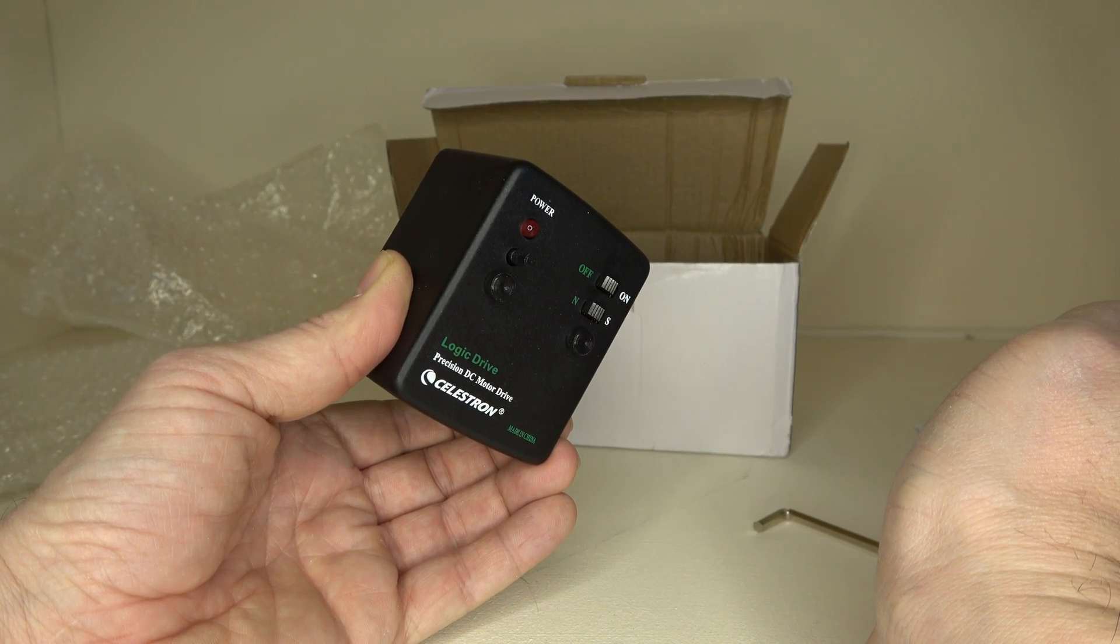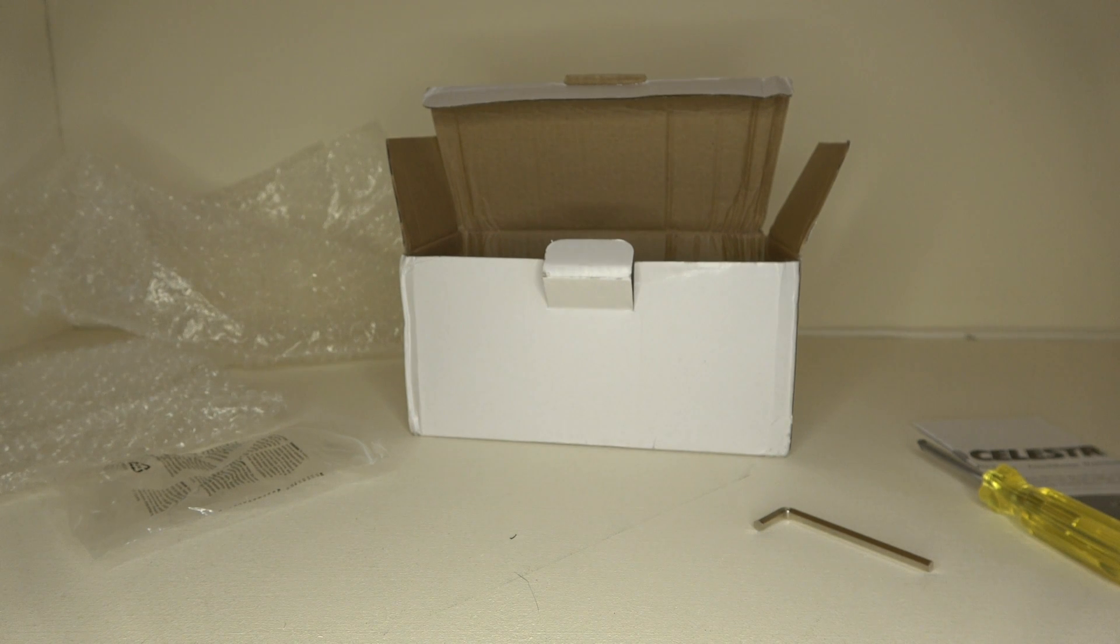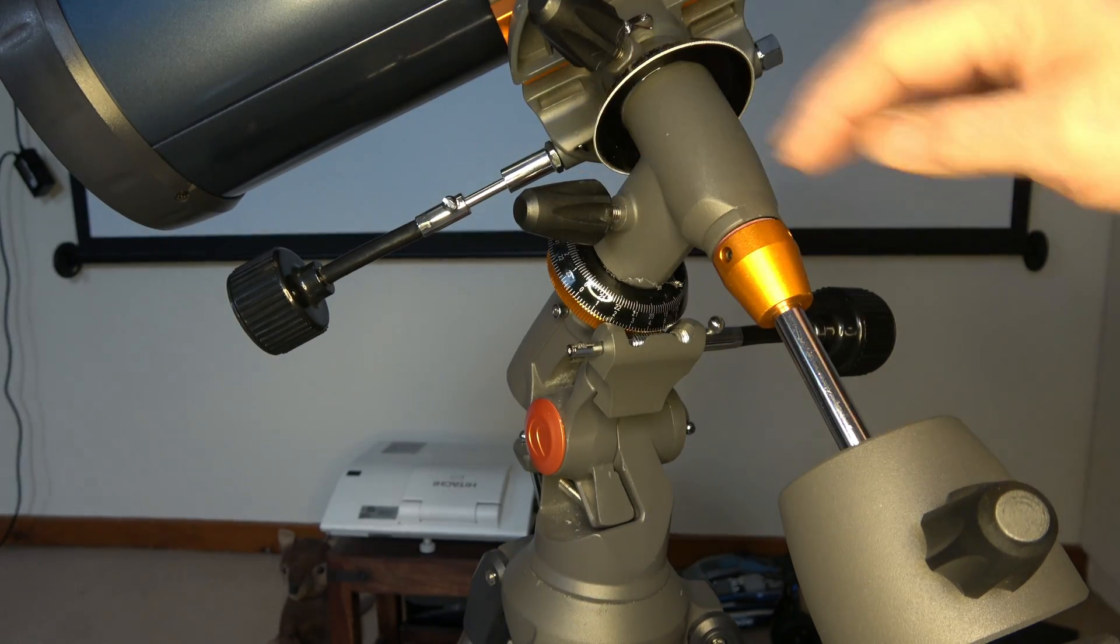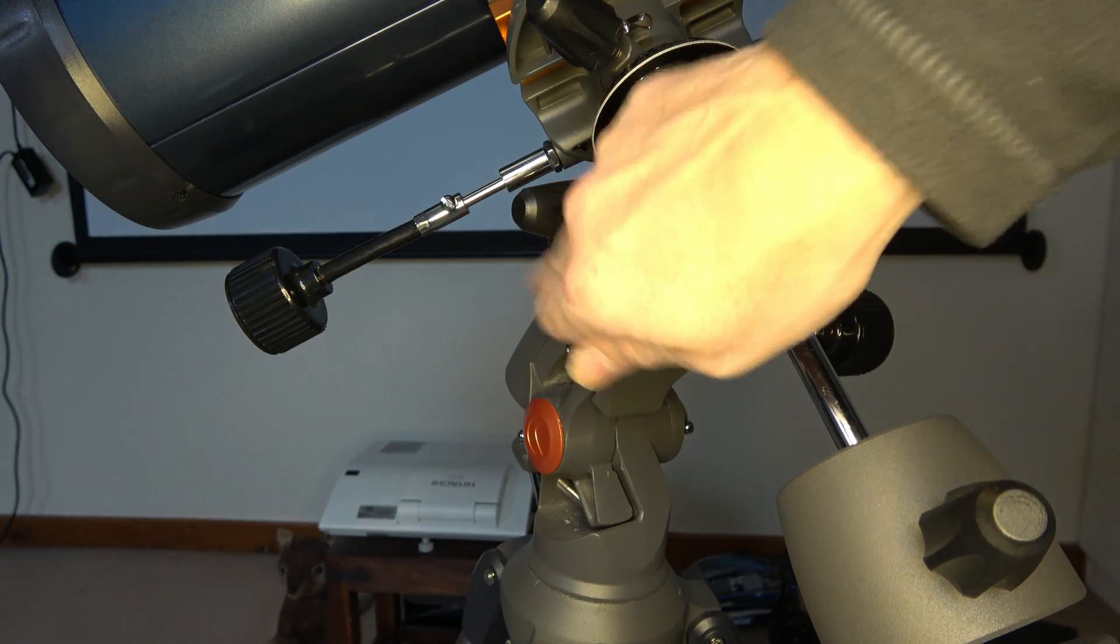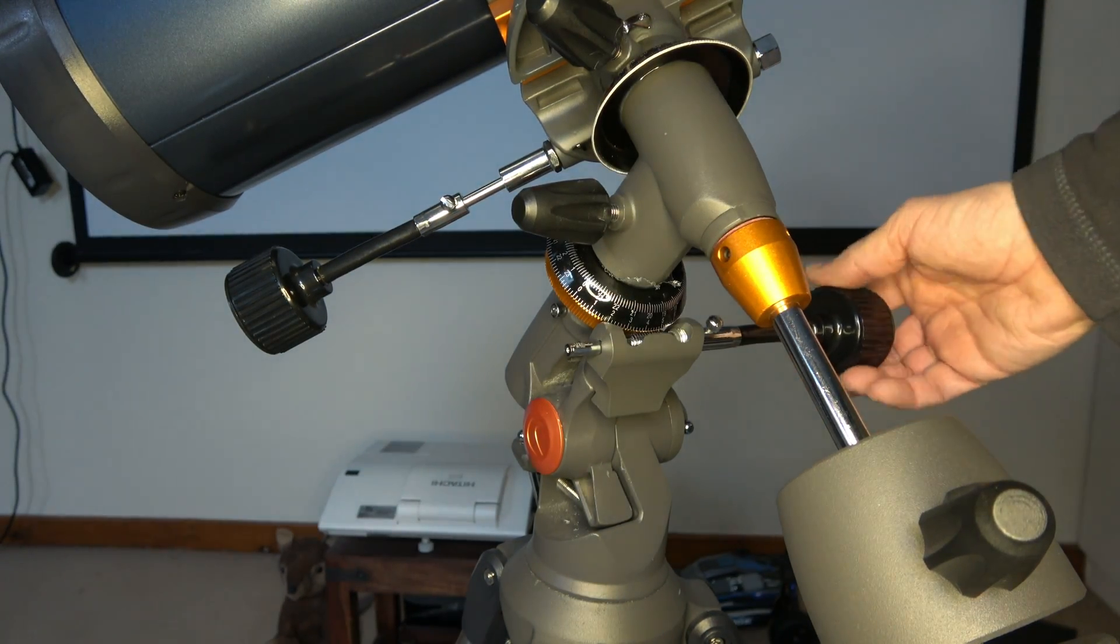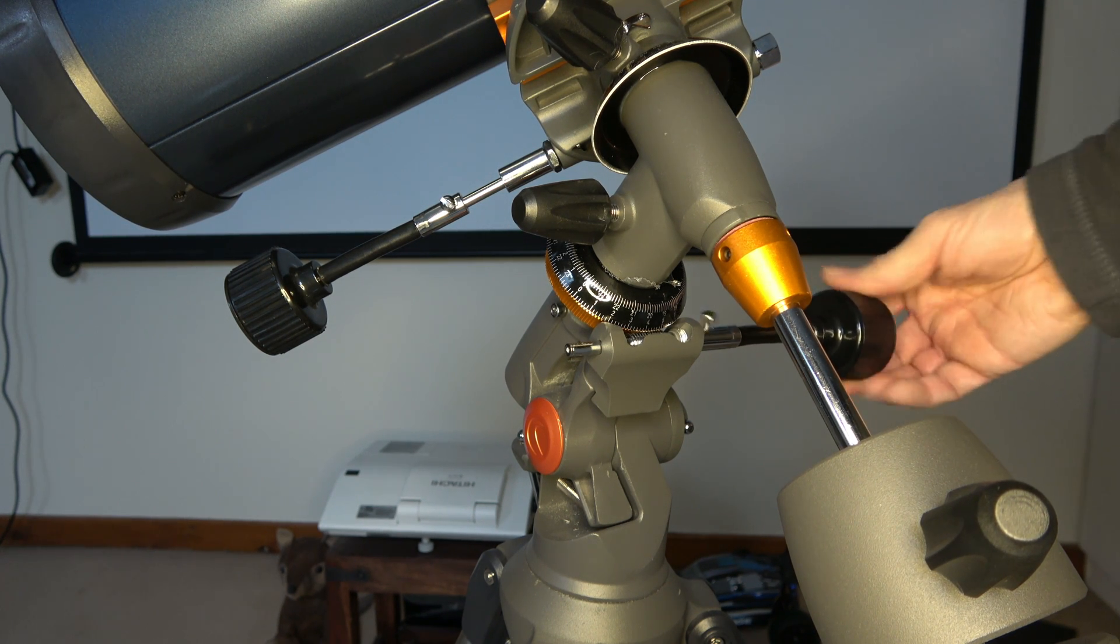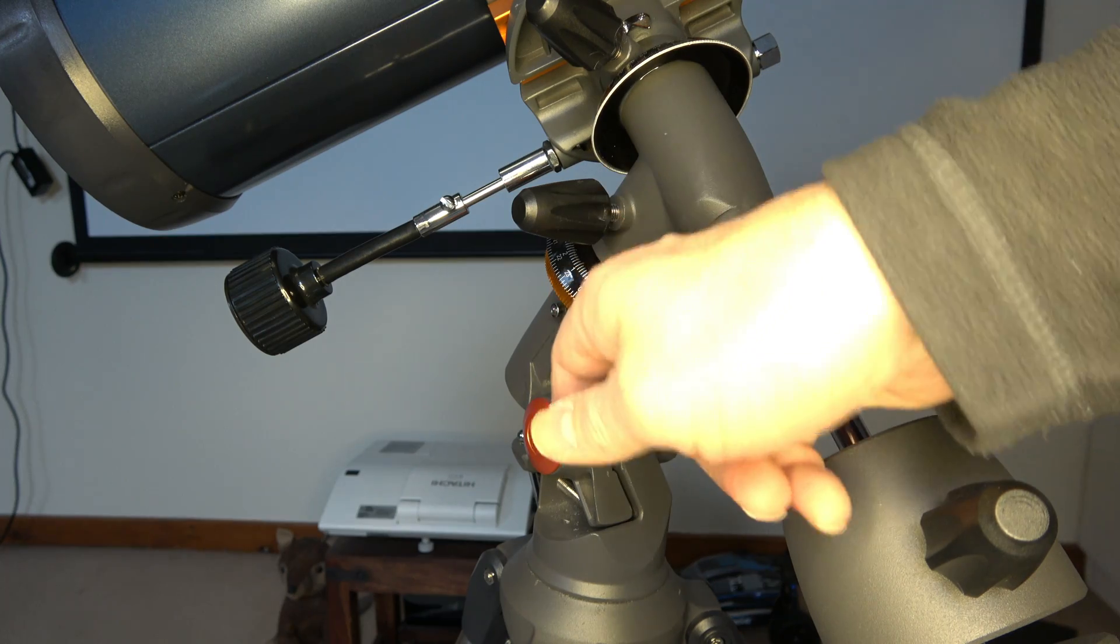So let's fit it to the telescope. Looking at the equatorial mount, this is the part we're going to connect it to on the telescope. This is the right ascension slow motion controller. As you can see, it turns there and there is a small log on the other side of it.